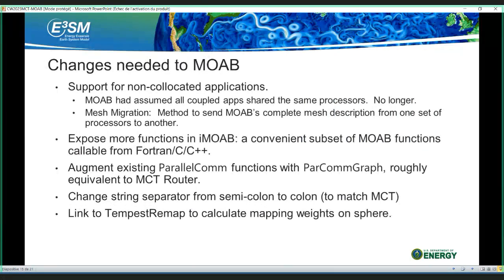We had to make changes to MOAB as we developed this. MOAB had assumed all coupled apps share the same processors, which isn't true in climate. We added a mesh migration concept that allows MOAB to send a complete mesh description from one set of processors to another. We explored more functions in iMOAB — the convenient subset of MOAB functions callable from Fortran, C, and C++. We added a par-com graph roughly equivalent to the MCT router, changed the string separator from semicolon to colon to match MCT, and linked to the Tempest Remap library to calculate mapping weights on the sphere.